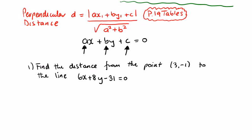We have five variables going into the formula, so it's good maths to write them down to eliminate error. So: a = 6, b = 8, c = −31, x₁ = 3, and y₁ = −1.